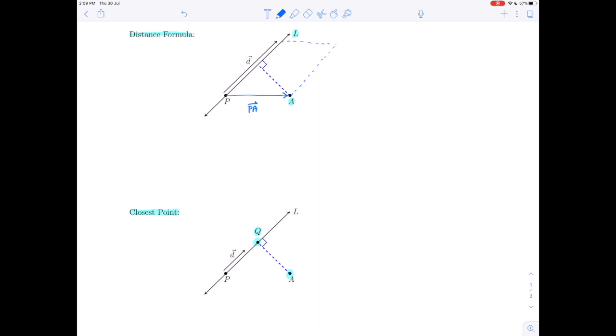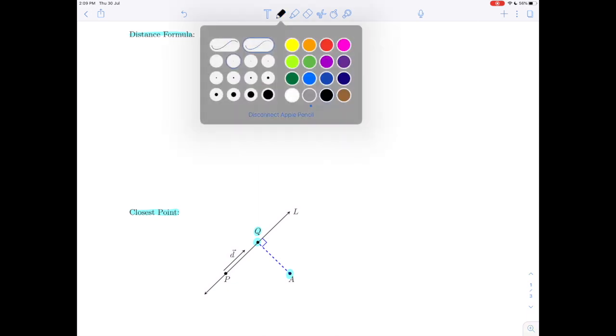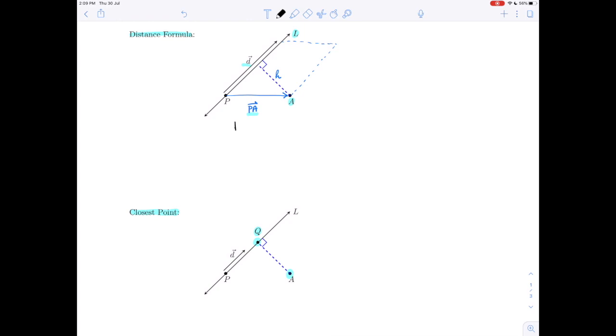Now, I'm going to add something extra to the diagram. I'm going to add some dotted lines to form a parallelogram, a parallelogram that has vectors PA and the direction vector d of the line as its sides. And if we look at that parallelogram, the height of that parallelogram turns out to be exactly the distance that we want. So the distance from point A to line L is exactly the height of the parallelogram.